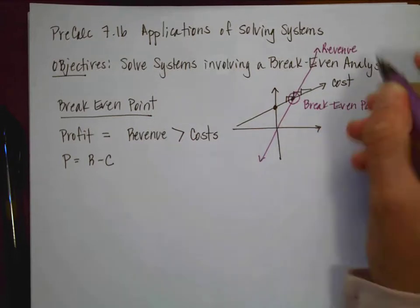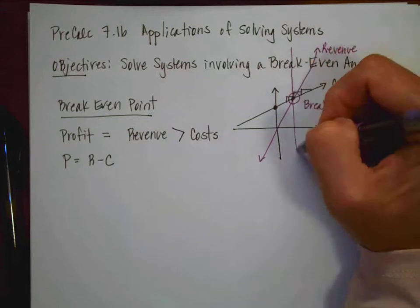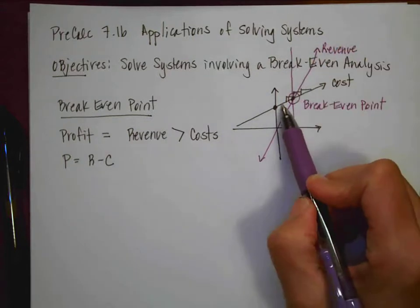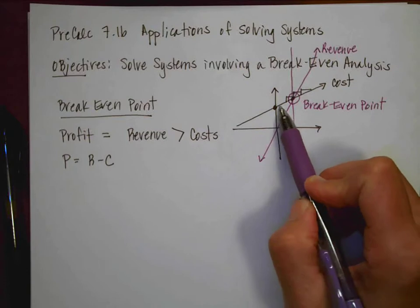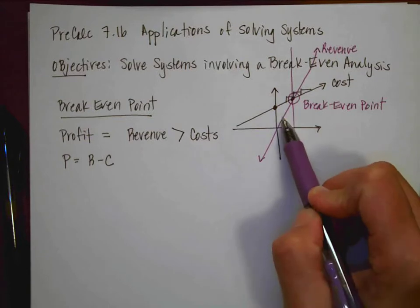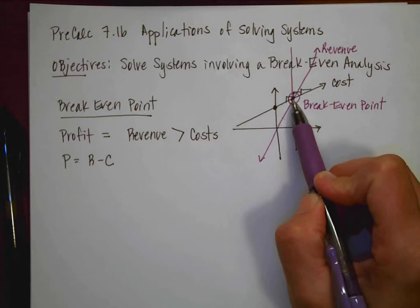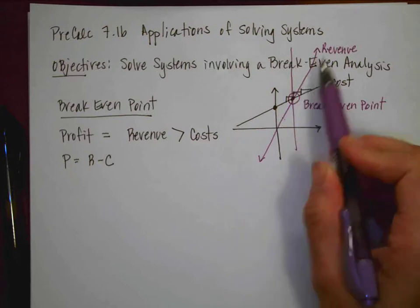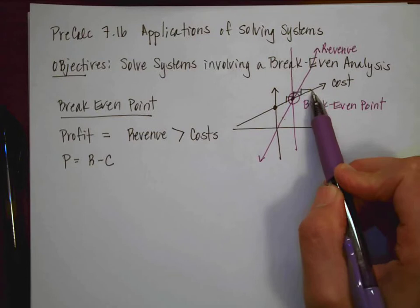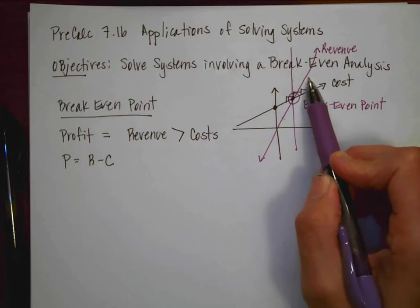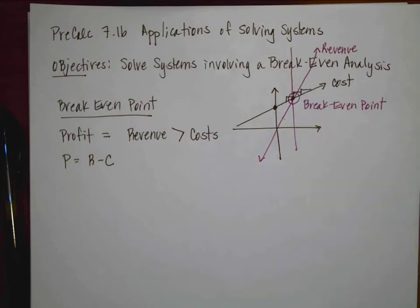So if you'll notice, to the left of that point, cost is bigger than revenue. So that means that it's more expensive than the money that I'm making. On the other side of the break-even point, notice that now the revenue exceeds the cost, which means I'm making money.